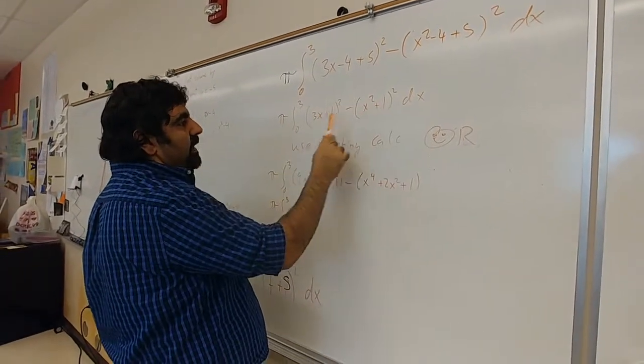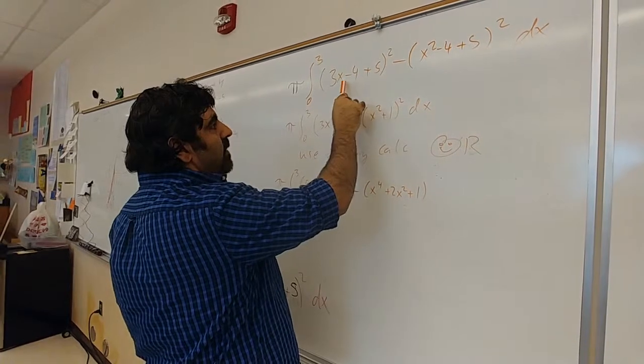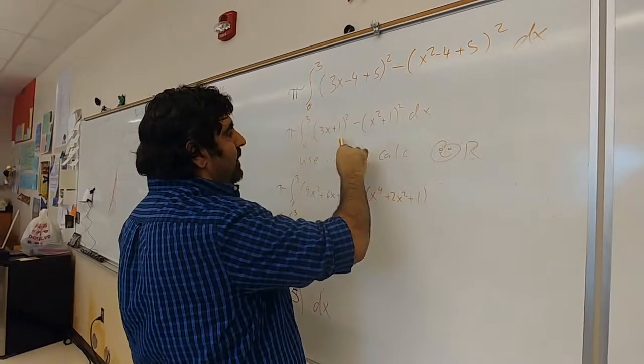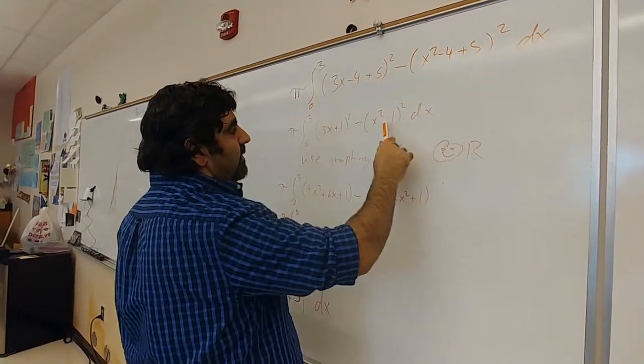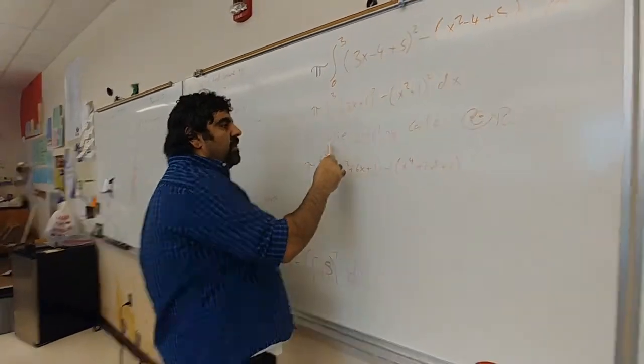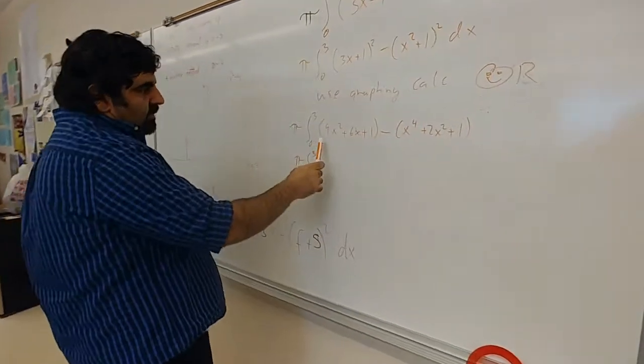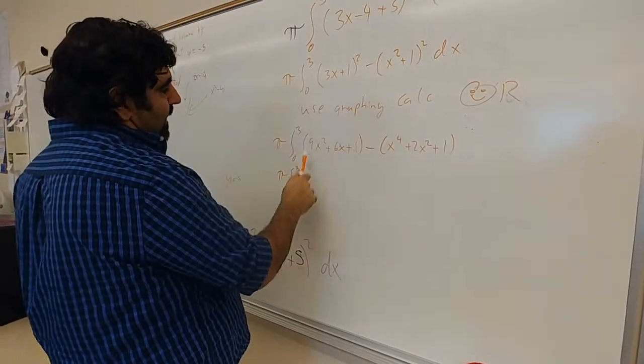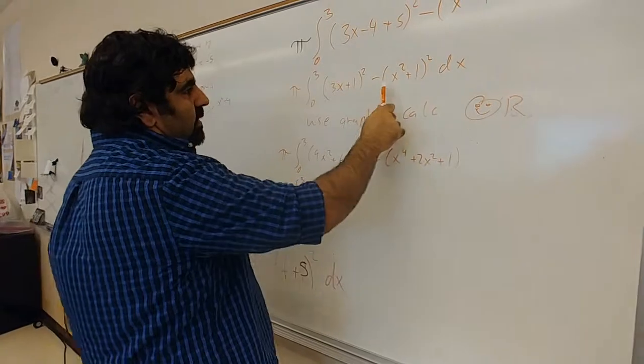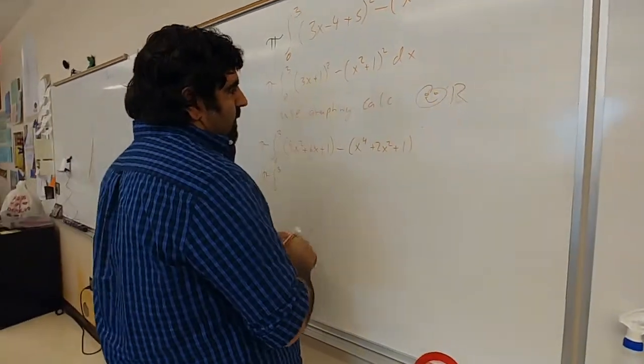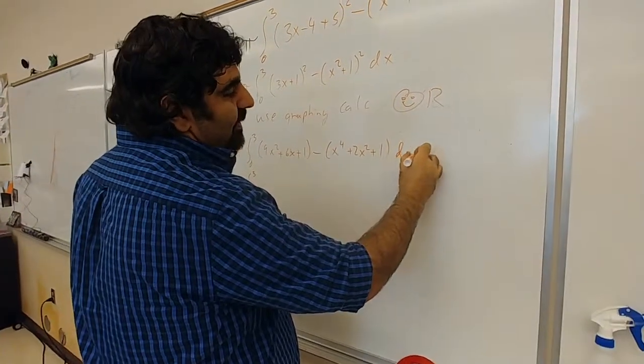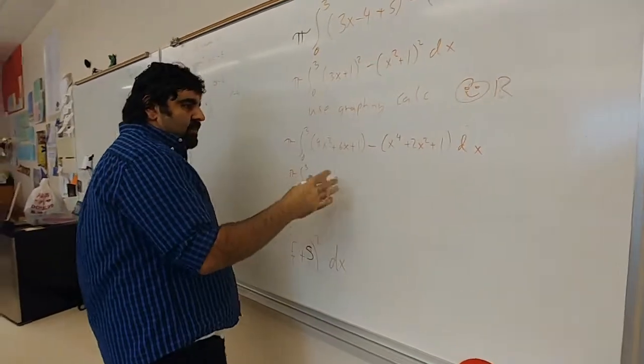Minus 4 plus 5 gives me 1, minus 4 plus 5 gives me 1. You can use a graphing calculator or just do it by hand real quick. So I went ahead and squared that, which is this, minus you square that, you get this. Got my dx.